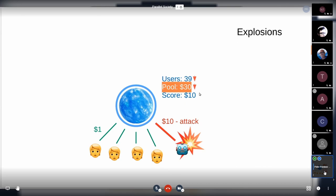You see now the number of users declined and the pool declined, but still everybody else will get the score of $10. Everybody in this group will still be able to receive a score until there is something in the pool to allow another attack.